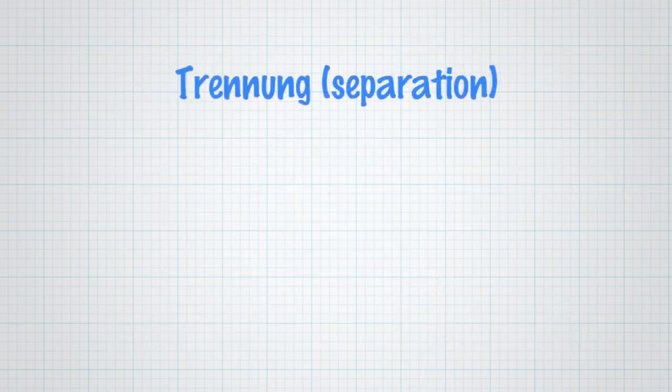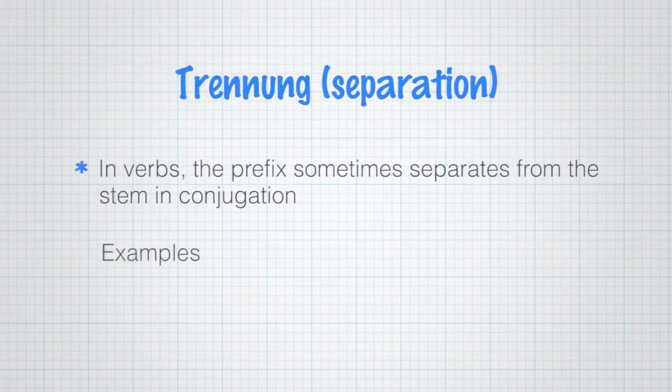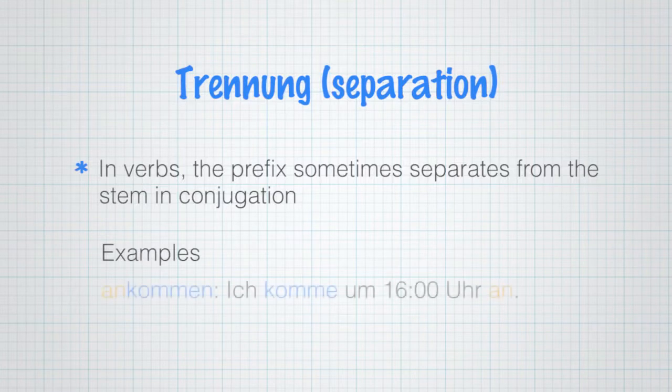Now, what am I talking about with all this separation? Sometimes what happens in a sentence is that the prefix separates from the stem as the verb changes, as it conjugates. So here are a few examples of what's happening there: ankommen.